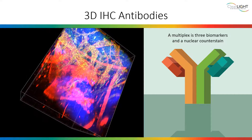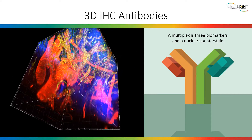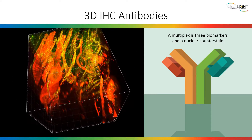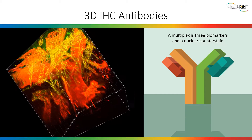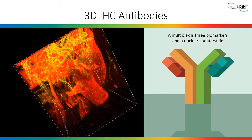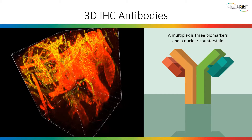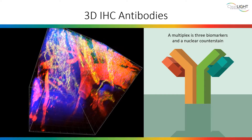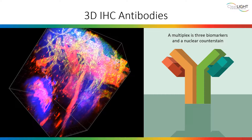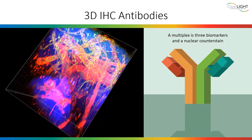ClearLight's 3D immunohistochemistry uses antibodies to highlight and identify antigens within a tissue sample. After tissue clearing, multiplex immunostaining is performed. A multiplex consists of three biomarkers and a nuclear counterstain.